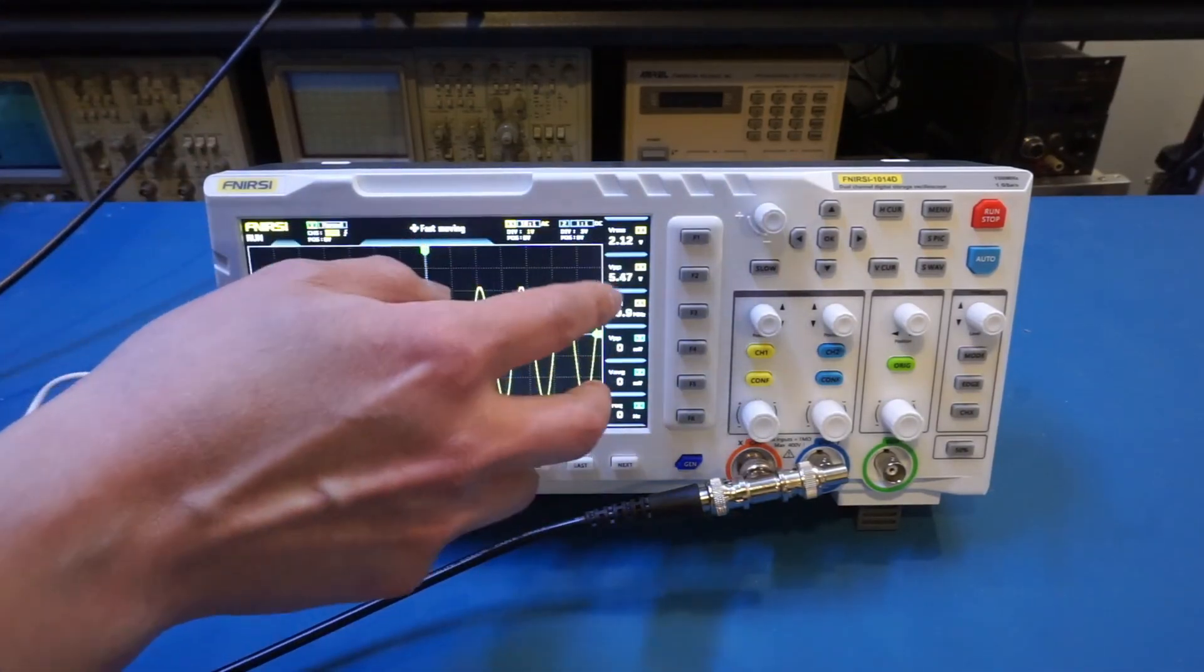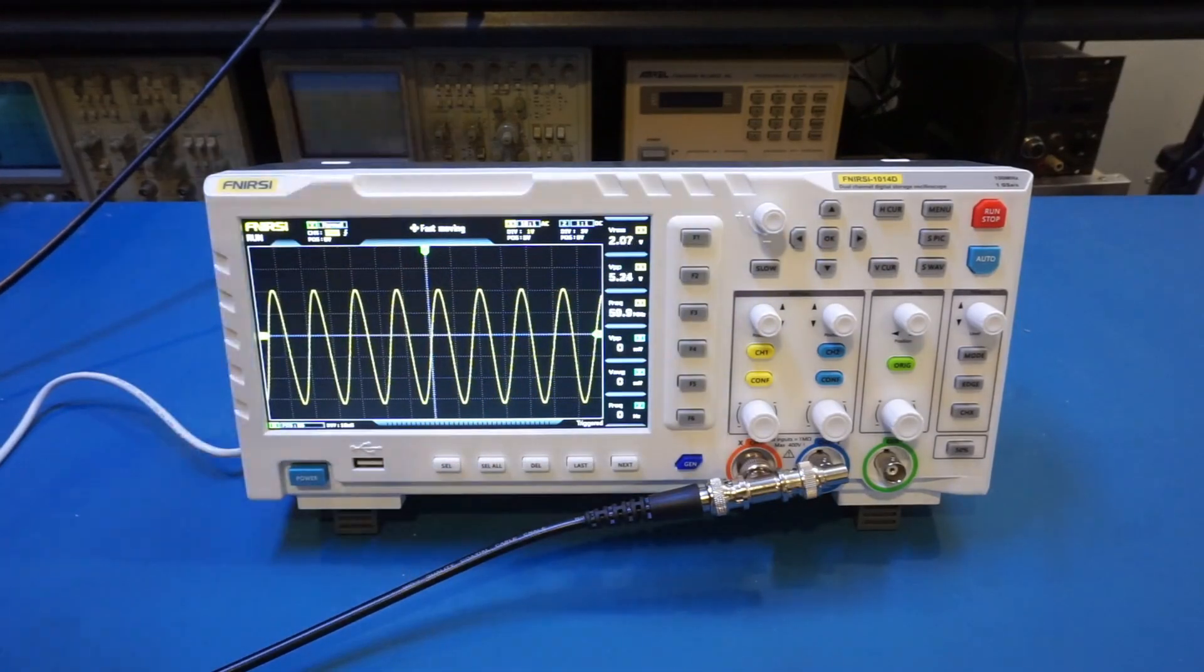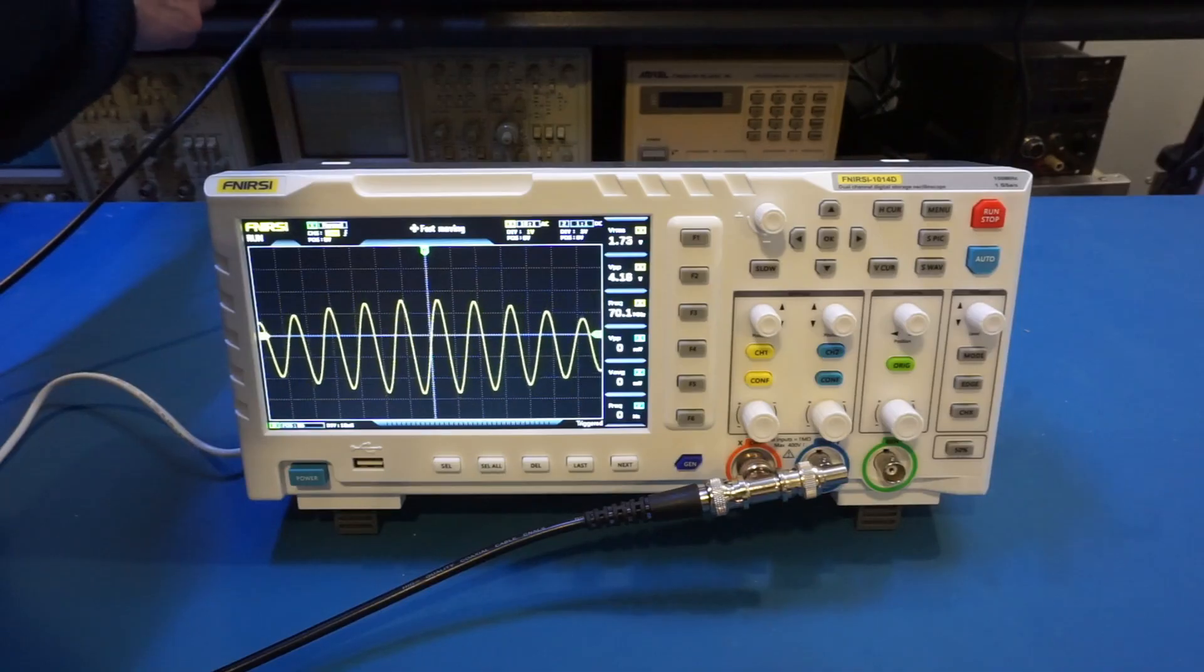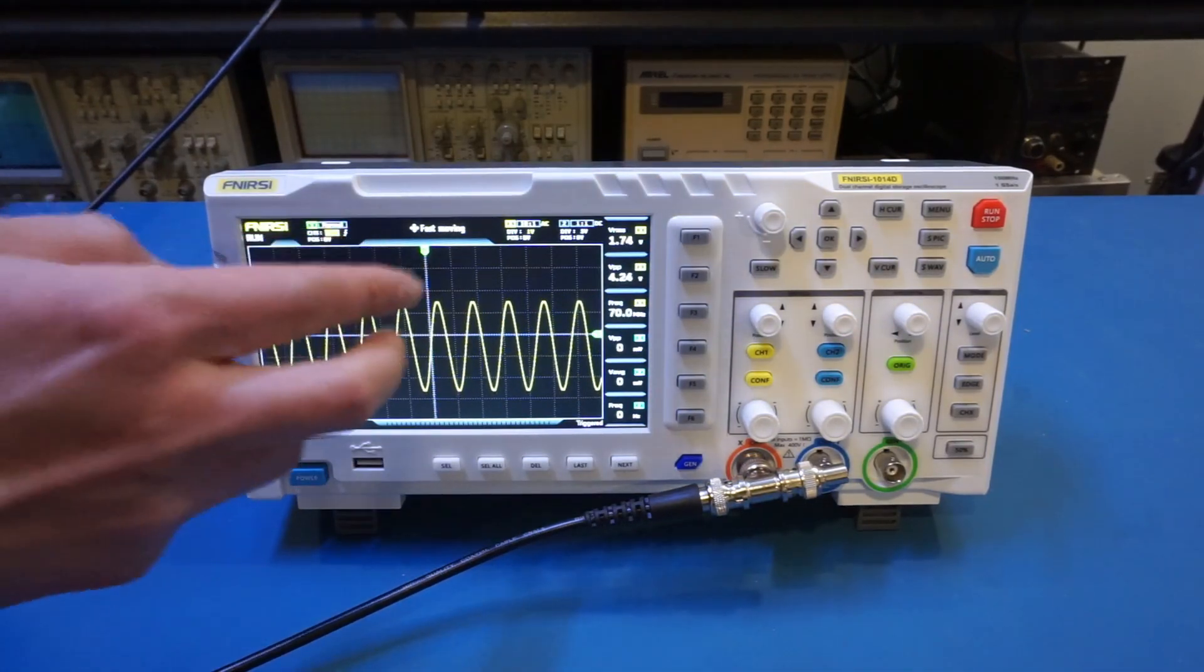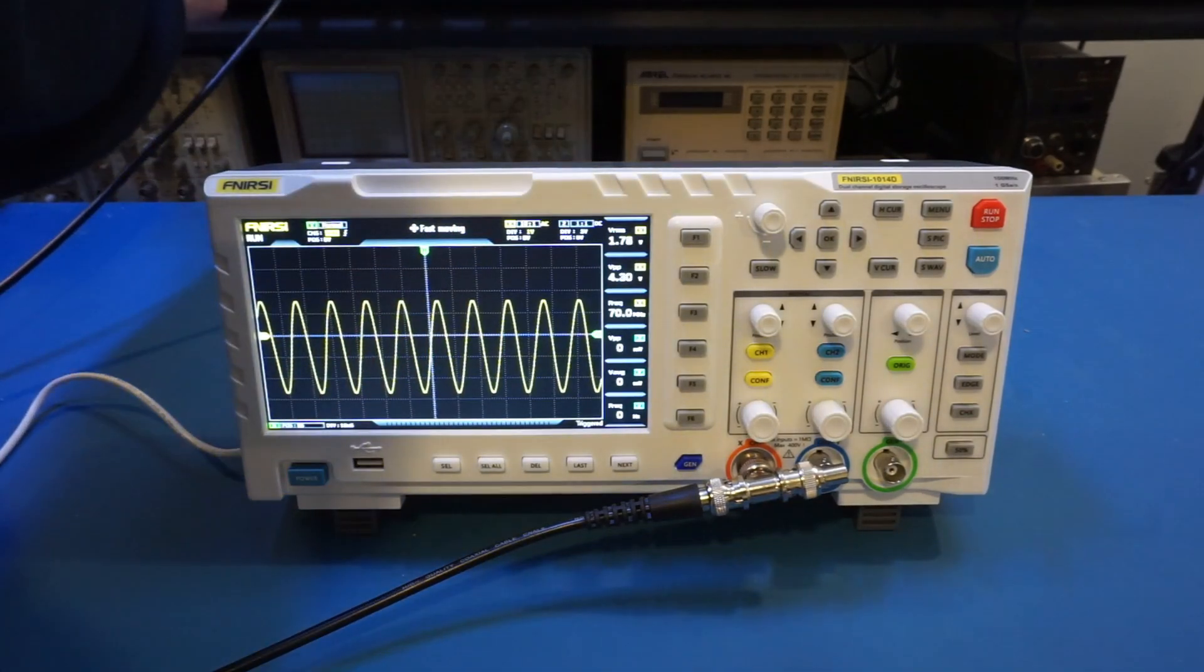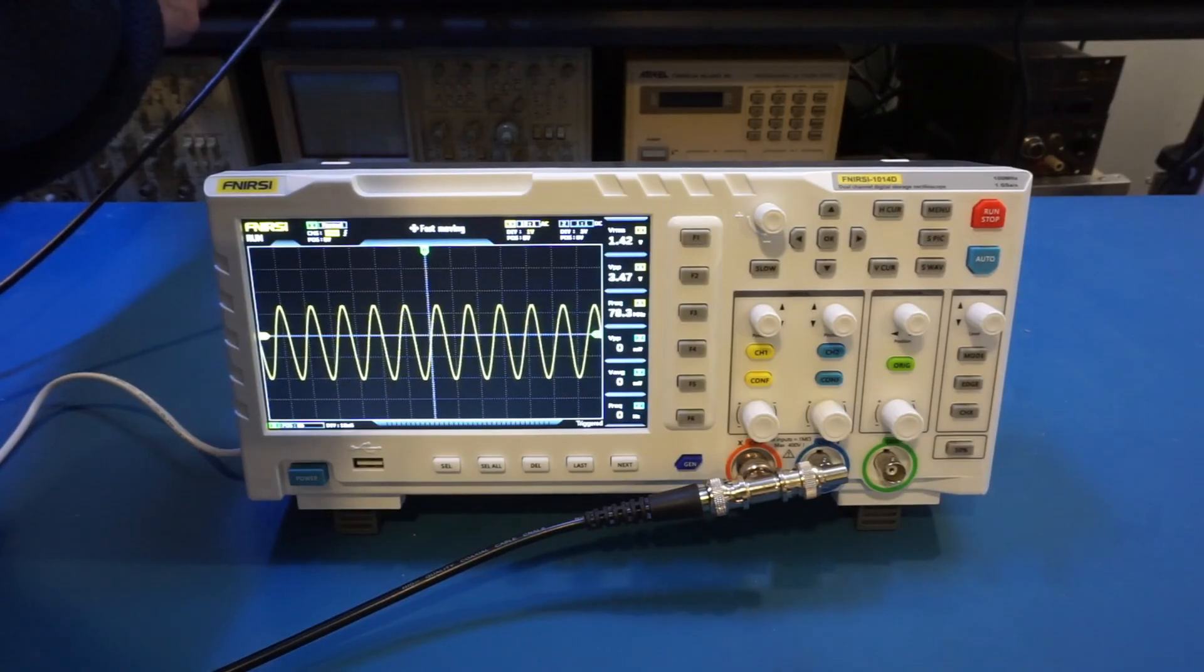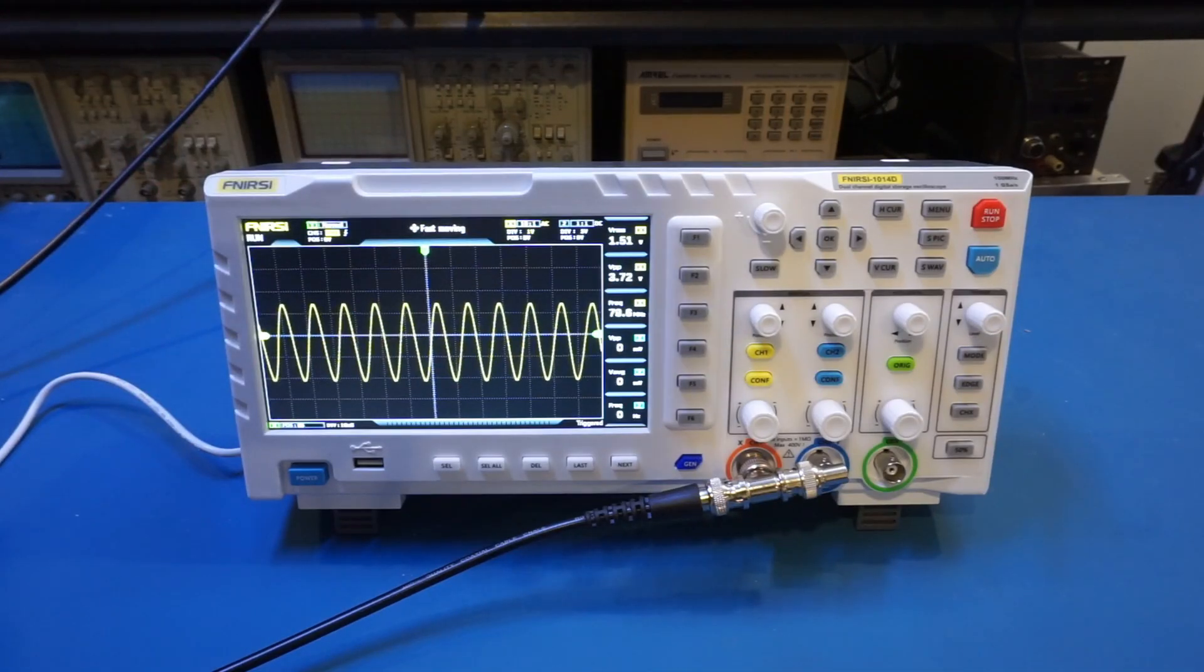So let's do 70 megahertz, and you can see that we dropped significantly. Right now it's only 4 volts. And we can increase to 80. So clearly the bandwidth is nowhere near the 100 megahertz that is specified.